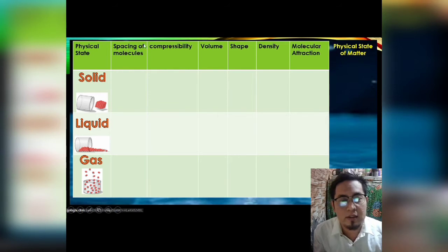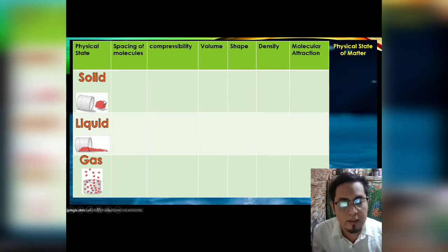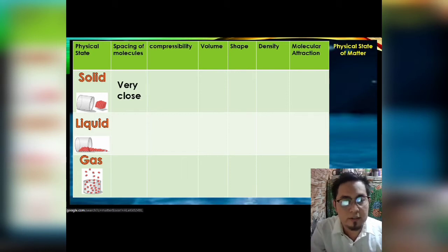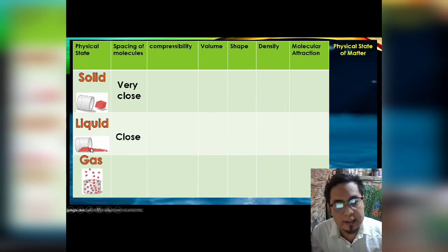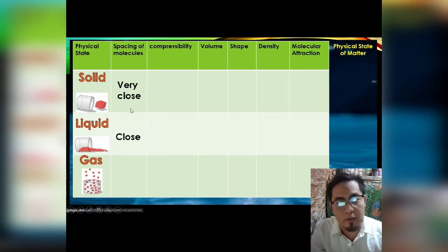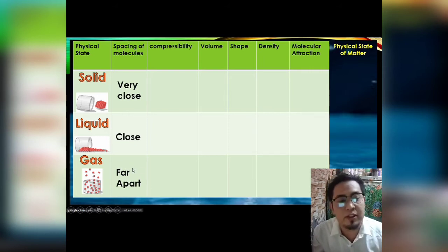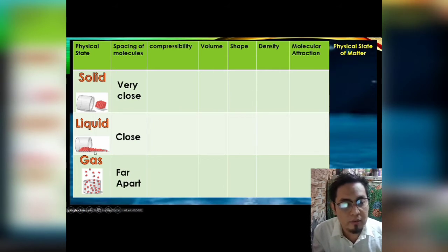Now let us look at the spacing of molecules. When we look at the spaces of molecules of a solid, the particles are very close to each other. For liquid, they are close but not as close as solid. For gas, the molecules are far apart from each other — from very compact in solid, to smaller spaces in liquid, to far apart in gas.